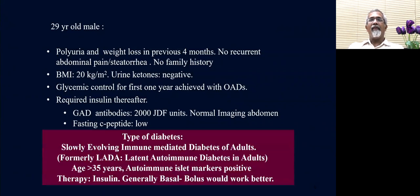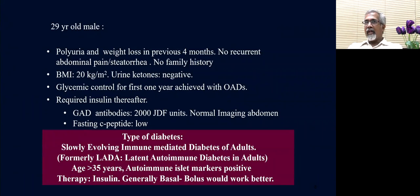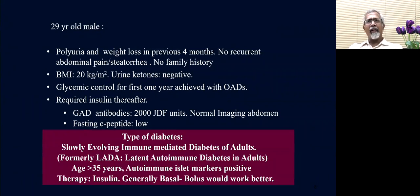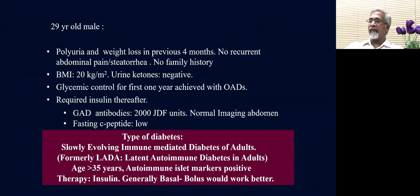The type of diabetes here is immune-mediated — slowly evolving immune-mediated diabetes of adults, formerly called LADA, generally seen above the age of 35 years. This falls into a bucket where it is not typical type 1 diabetes. The autoimmune islet cell markers are positive and the therapy requires insulin; generally, basal-bolus insulin works much better.